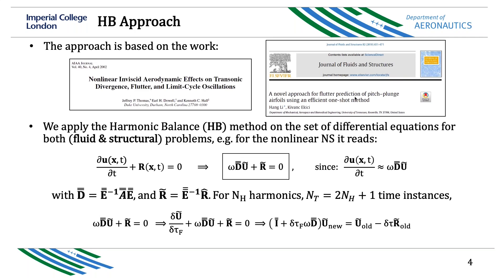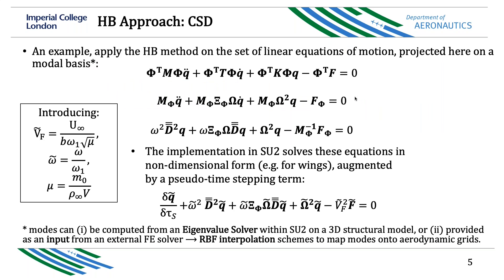The harmonic balance method is a very well-established technique. It allows us to convert an unsteady problem into a steady problem by expanding the fluid and structural variables into harmonics. On the computational structural dynamics side, we have implemented this harmonic balance method from the modal solution. We can compute the modes from the native eigenvalue solver built within SU2, or provide input from an external FEA solver such as Nastran, and then use RBF interpolation to map the modes onto the aerodynamic grids.